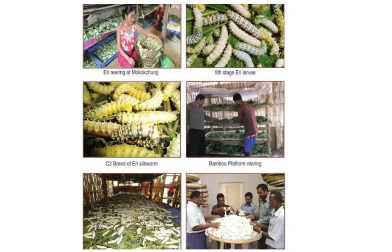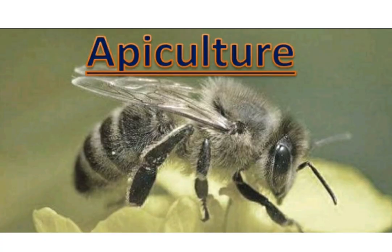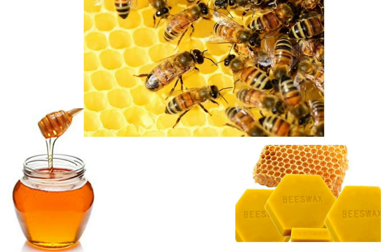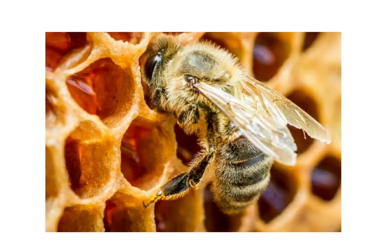In silk farms, the silk is removed from the cocoon and treated with chemicals to obtain a silk yarn. Breeding and management of silkworms for the production of silk is known as sericulture, and it is an important cottage industry in India. Next we have apiculture — the breeding and management of honeybees for commercial purposes is called apiculture.